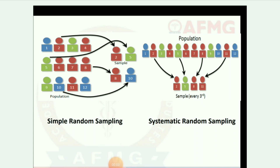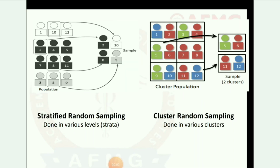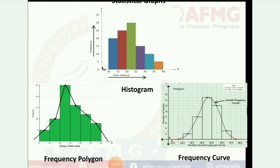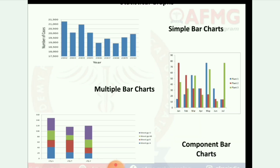Next image: simple random sampling and systematic random sampling. Next: stratified random sampling done in various levels, and cluster random sampling done in various clusters. Here are some pictures of statistical graphs: histogram, frequency polygon, frequency curve, simple bar charts, multiple bar charts, and component bar charts.